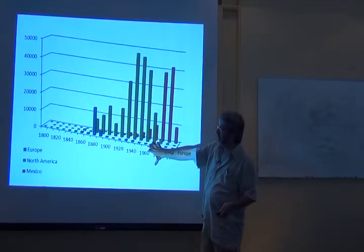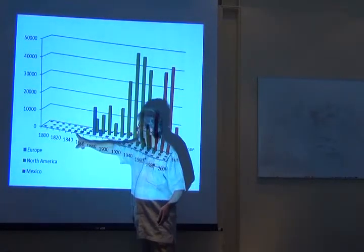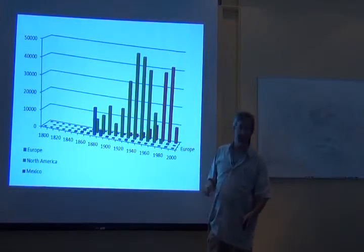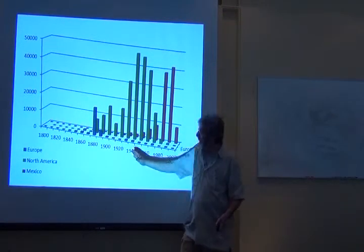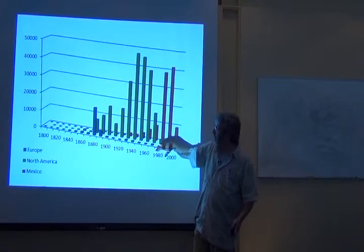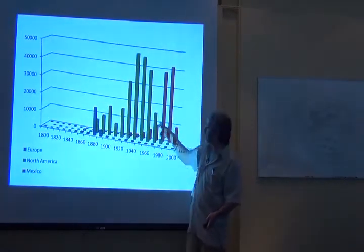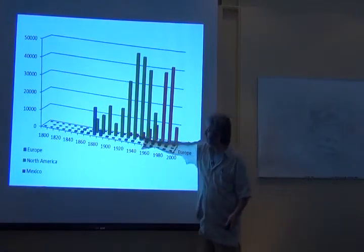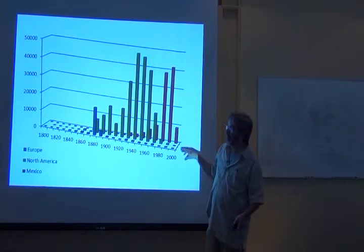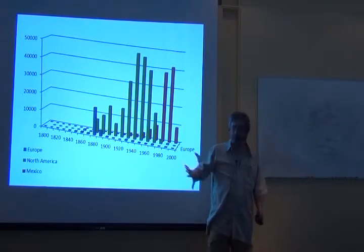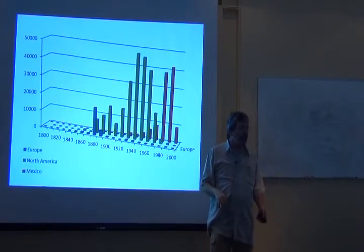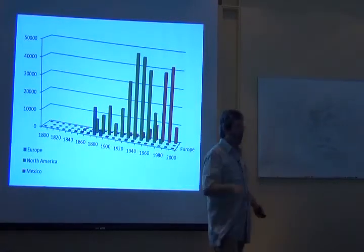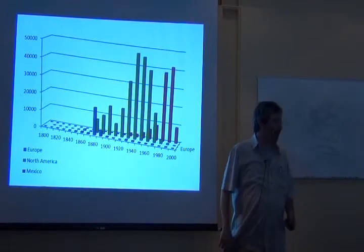The dynamic in Mexico is that early on, look at these blue columns, early on the collectors were European. So we're talking before 1900. By the end of the 19th century and into the 20th century, North America dominates. And then by the end of the 20th century and into the present, Mexico dominates. So all the new specimens tend to be held in Mexican institutions. But all of the old specimens, and in fact the three-quarters or more of the specimens, are held outside of Mexico.